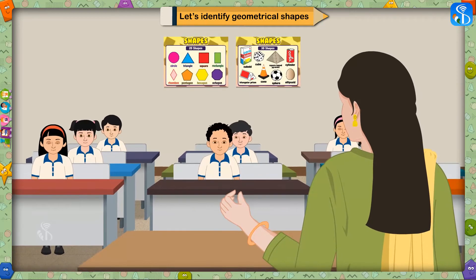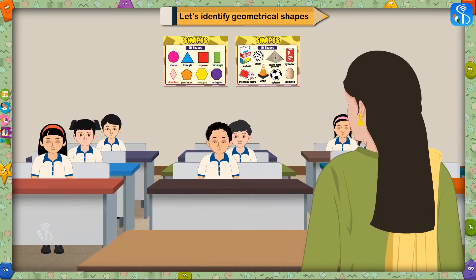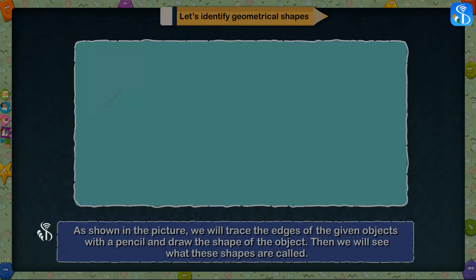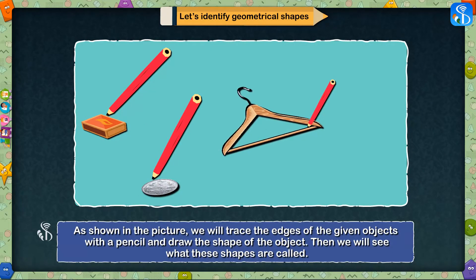We come across many objects every day. These objects have different shapes. As shown in this picture, we will trace the edges of the given objects with a pencil and draw the shape of the object. Then we will see what these shapes are called.